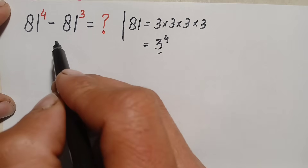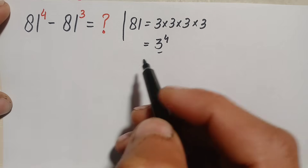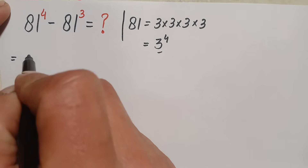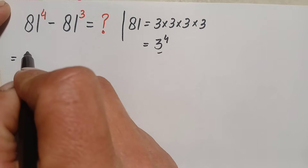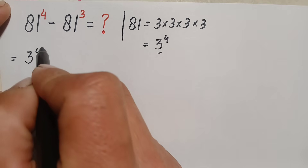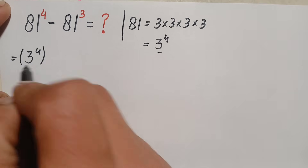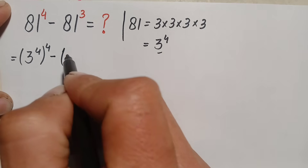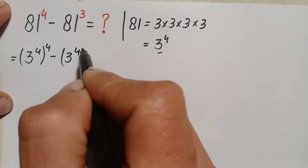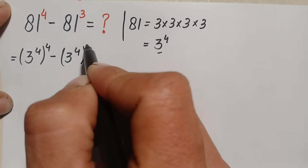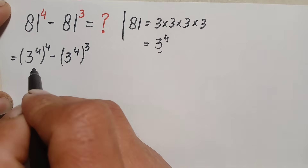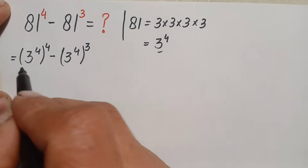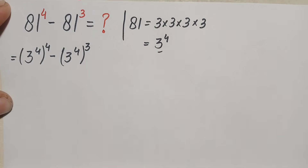Here we will replace 81 with 3 to the power 4. So the expression will become: 3 to the power 4, raised to the power 4, minus 3 to the power 4, raised to the power 3.5. In both terms we will use the exponential identity (a^m)^n.